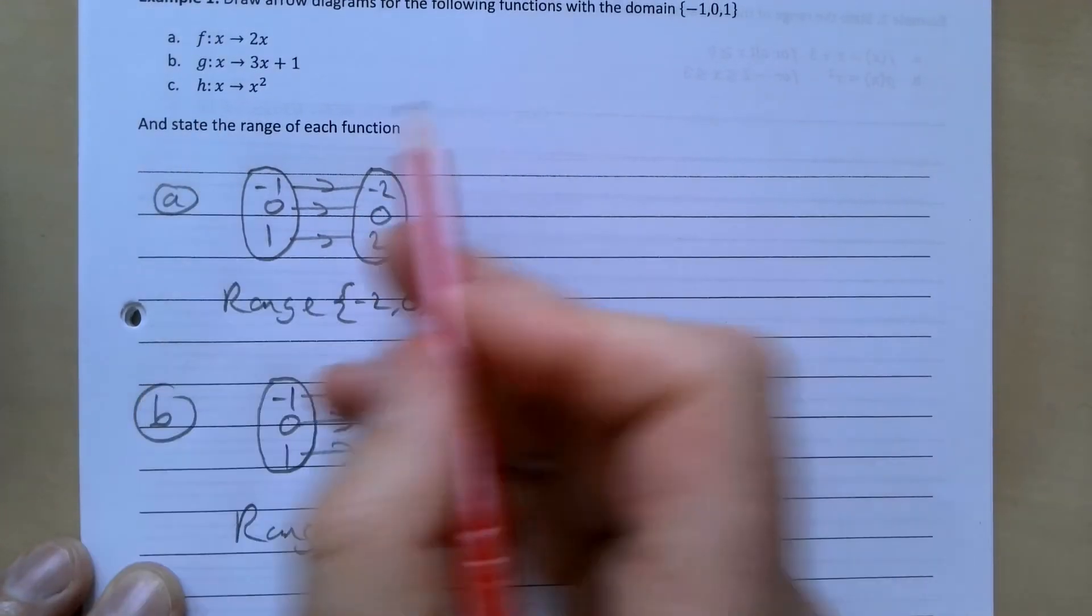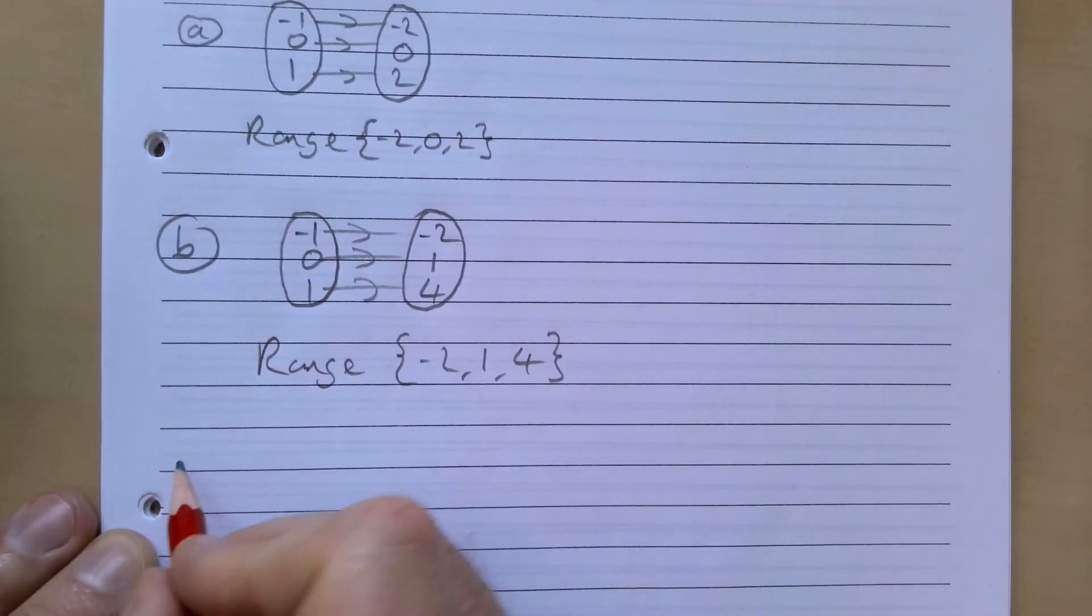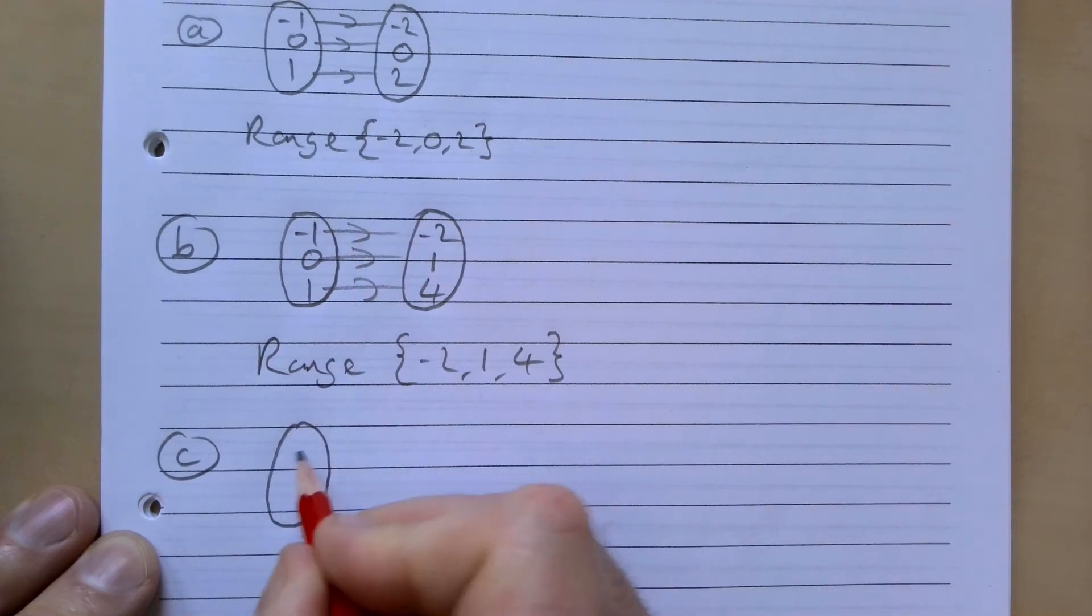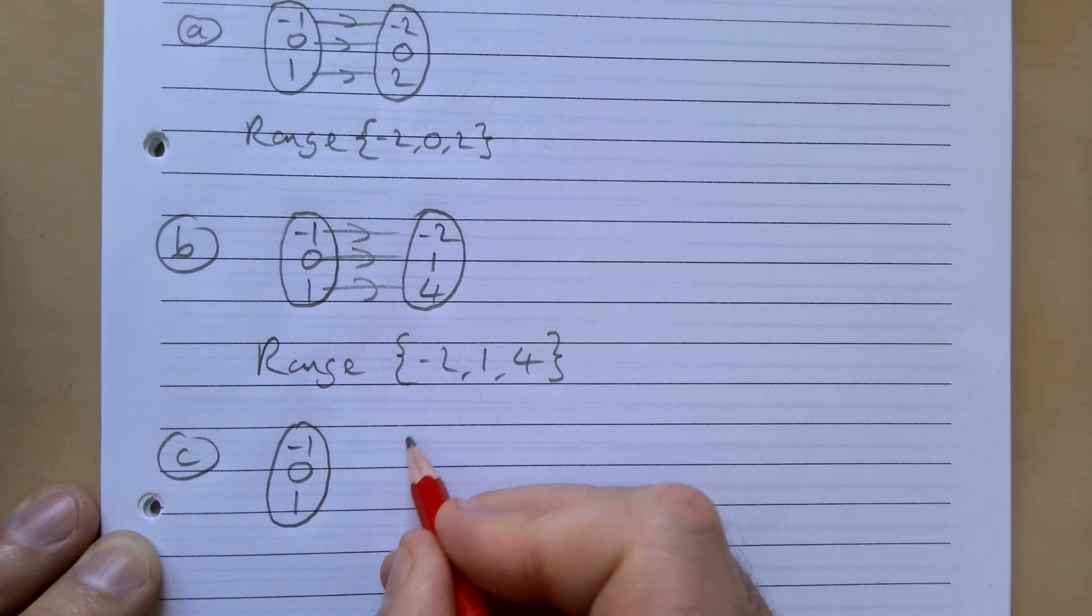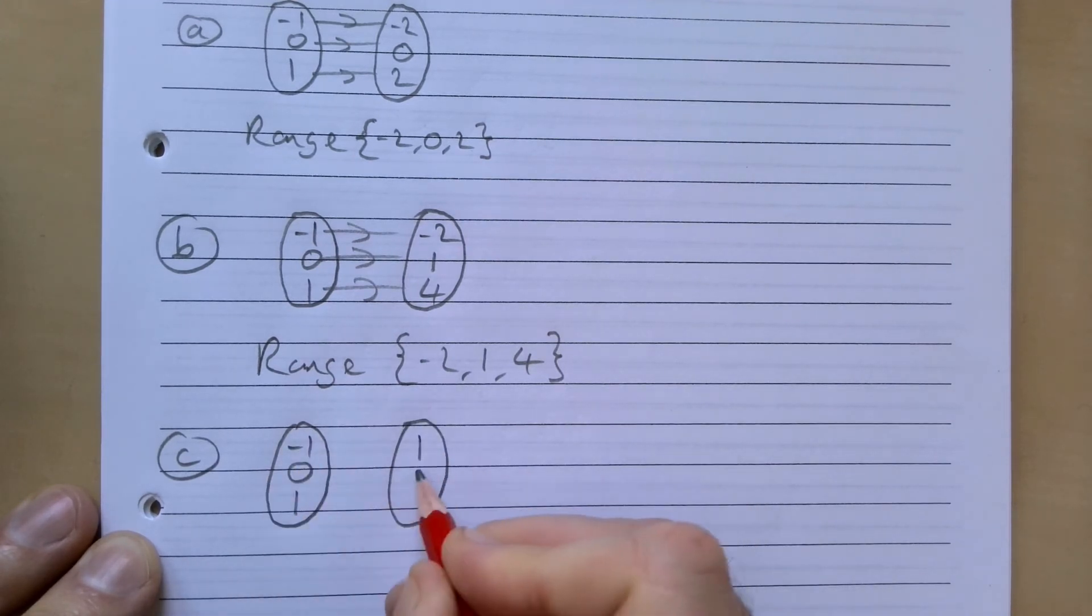For the next one, part (c), it's h(x) = x². So we have the domain {-1, 0, 1}. -1 squared gives 1, 0 squared gives 0, and 1 squared gives 1.